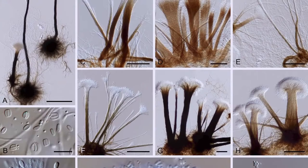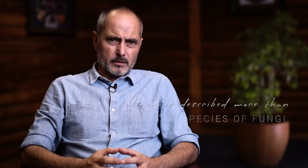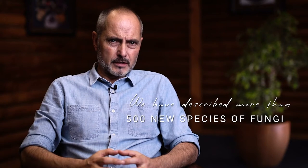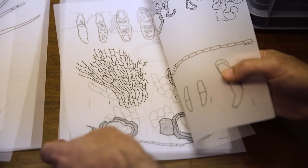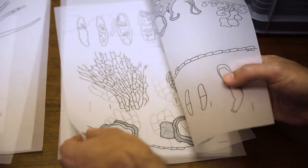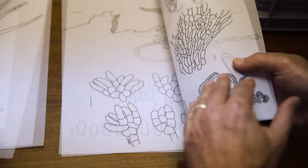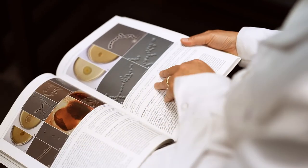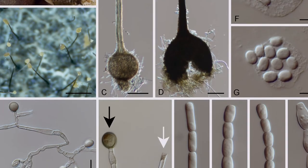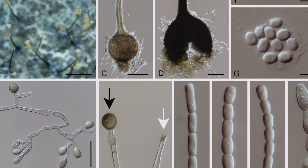In FABI, the focus is on plant health, and most of these diseases are caused by microscopic fungi. We have described more than 500 new species of fungi and several new insect species over the past 20 years. We initially made use of line drawings and black and white photographs. Currently, we most often use color photographs and more and more computer-generated imaging.